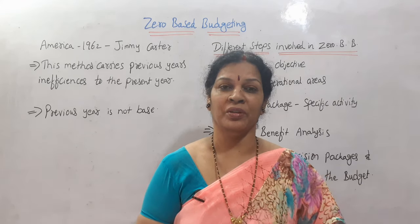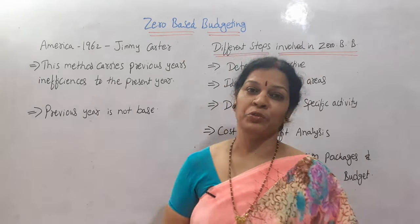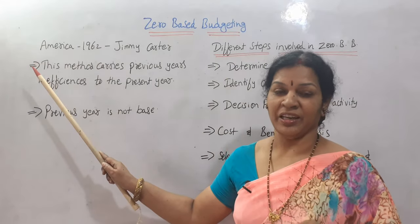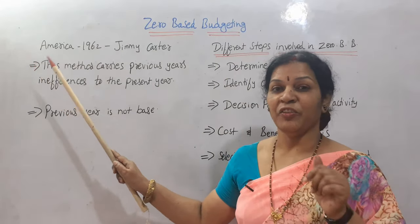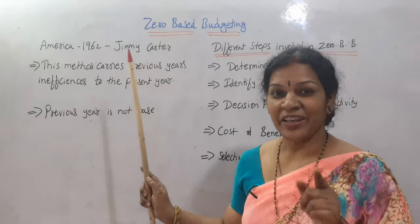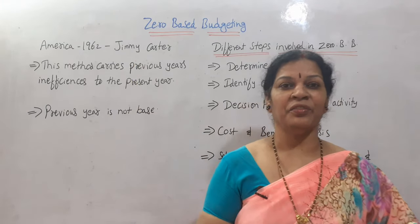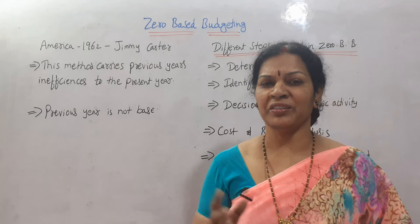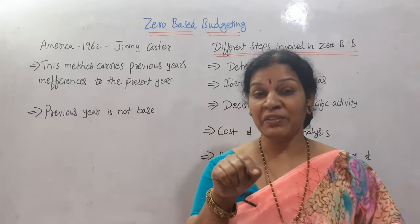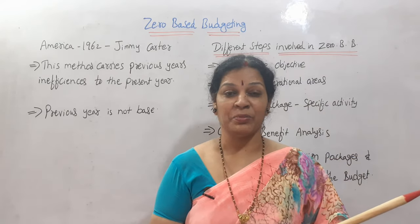This zero-based budget was first used in the year 1962 in America by former president Jimmy Carter. After that, people started using it. Remember, this is something different from previous budgets.